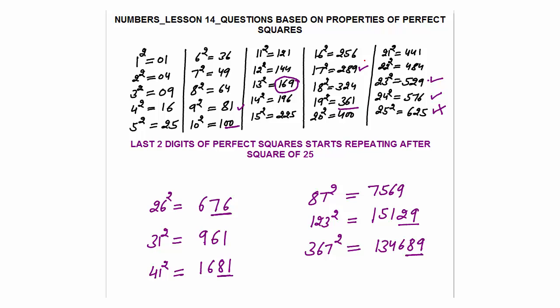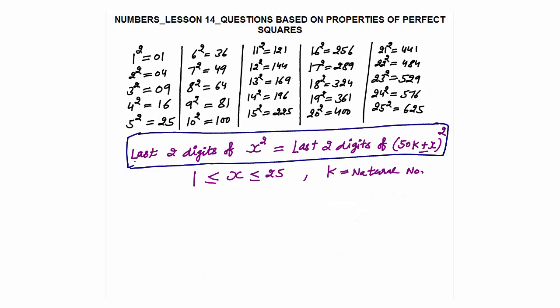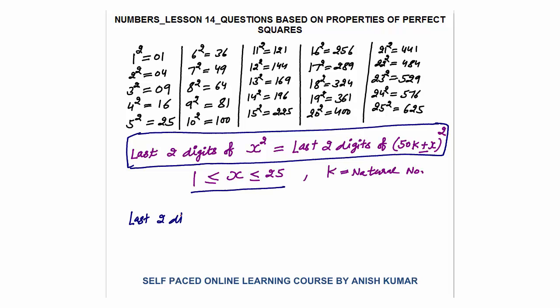What is the pattern? The last two digits of x squared, where x is between 1 and 25, will always equal the last two digits of (50k ± x) squared, where k is a natural number. For example, the last two digits of 13 squared — which are 69 — will equal the last two digits of (50k ± 13) squared.